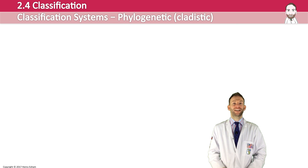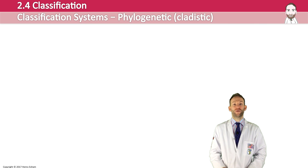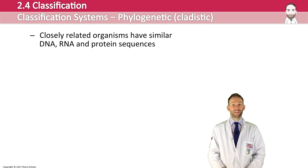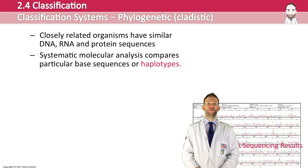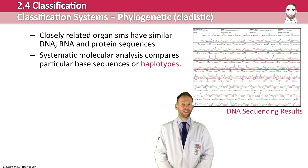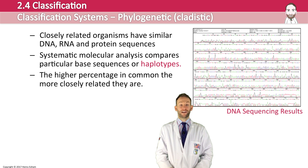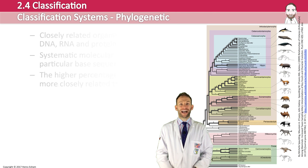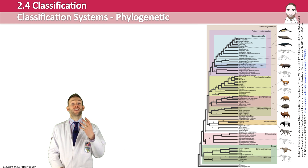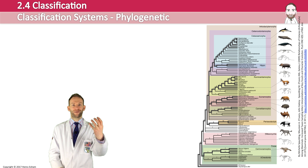A better and more widely used system is the phylogenetic or cladistic classification system, based on shared characteristics traceable to a common ancestor. It's really about how closely related organisms are. We can work this out using comparative molecular biology — more closely related organisms have more similar DNA, RNA, and protein sequences. By doing systematic molecular analysis and comparing base sequences or haplotypes, we can accurately determine how closely related two organisms are. This is used to construct a phylogenetic tree of life, and the proper name for that diagram is a cladogram. Within a cladogram you can look at clades — each clade is an ancestral species and all of its descendants.